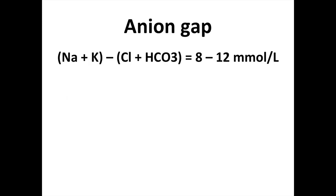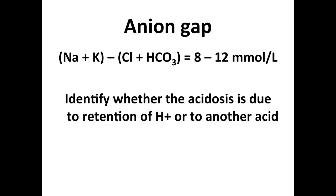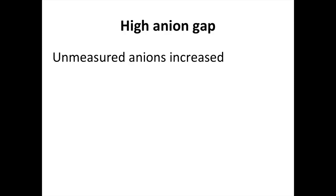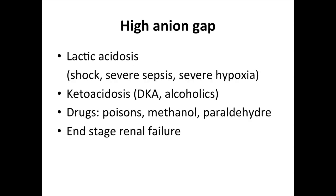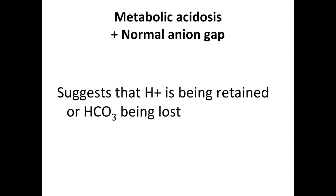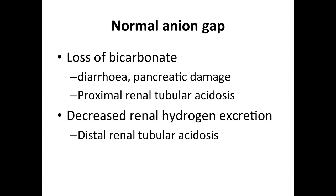Some may ask you to calculate the anion gap, and this is the formula for that. It is used to identify whether the acidosis is due to retention of hydrogen ions or to another acid. A high anion gap indicates unmeasured anions are increased — this would be present in lactic acidosis indicating high lactate, ketones in ketoacidosis, or the presence of drugs such as poisons, methanol, paraldehyde, or in end-stage renal failure. Metabolic acidosis with a normal anion gap suggests hydrogen ions are being retained or bicarbonate is being lost. Causes include loss of bicarbonate from diarrhoea, pancreatic damage, proximal renal tubular acidosis, or decreased renal hydrogen excretion in distal renal tubular acidosis.